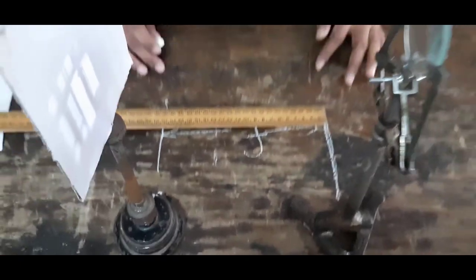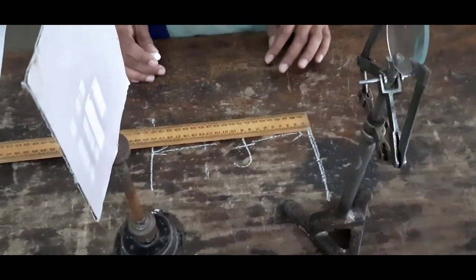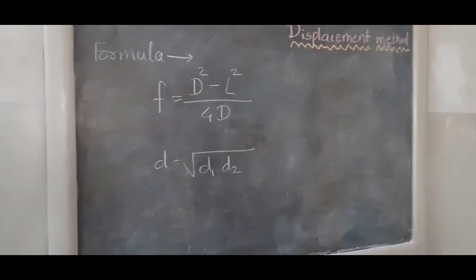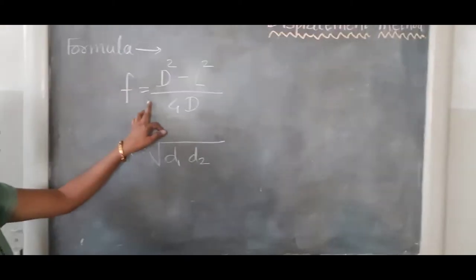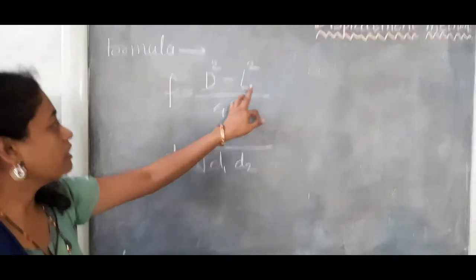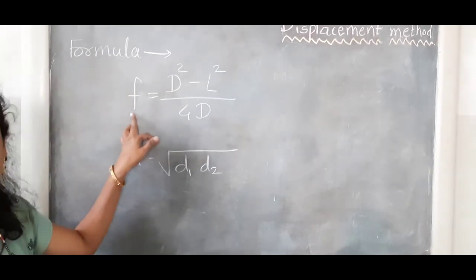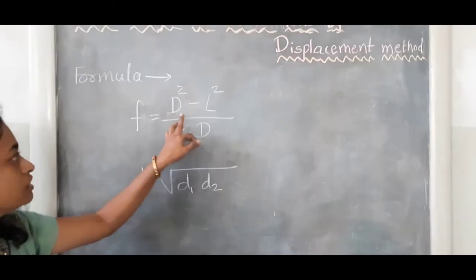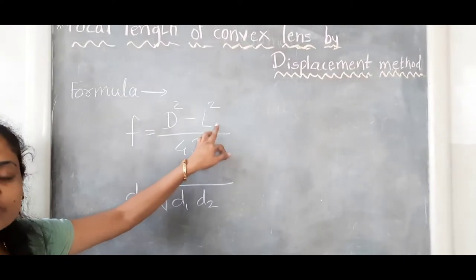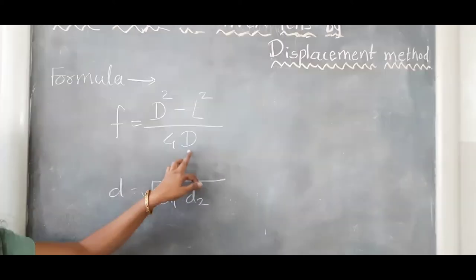Now we have to find out the focal length using the displacement method. For this, we use the formula: f equals D squared minus L squared upon 4 times D, where f is the focal length of the convex lens, D is the distance between the source and the screen, and L is the distance between the two positions of the lens.